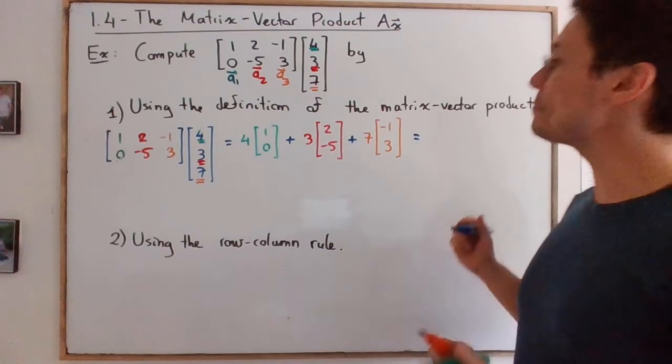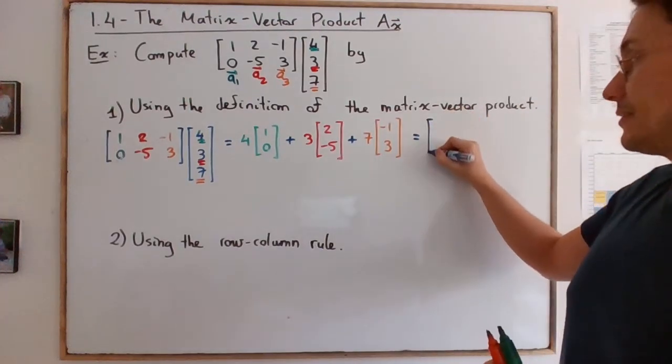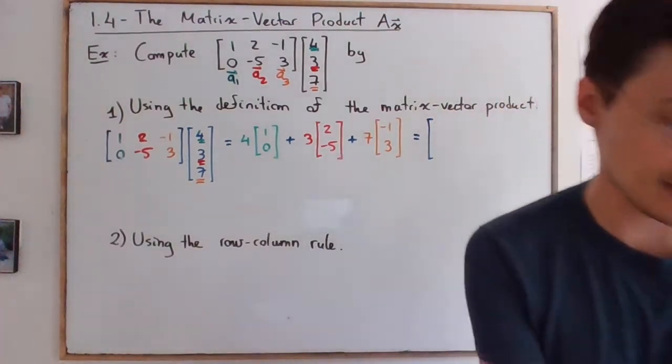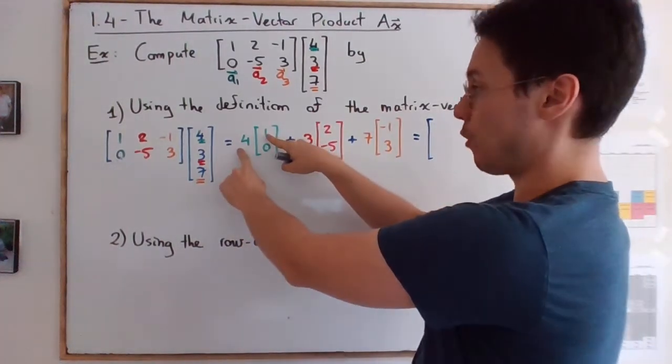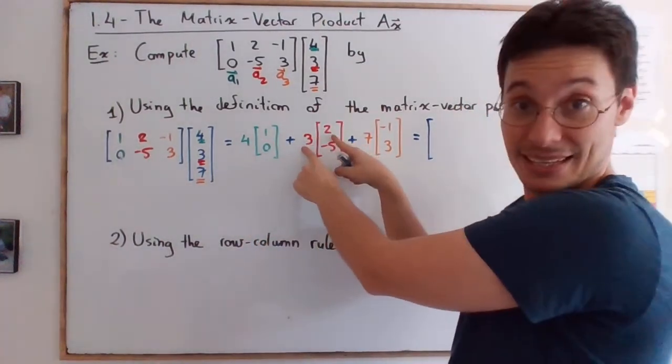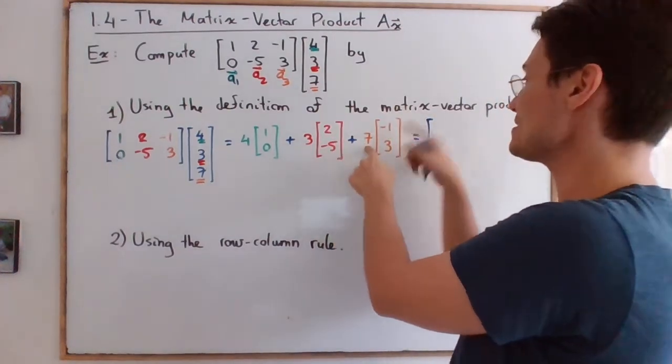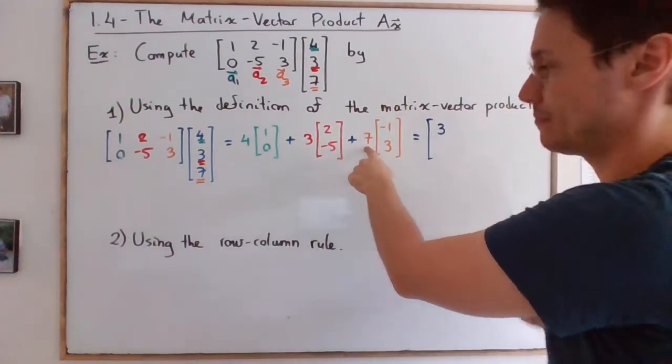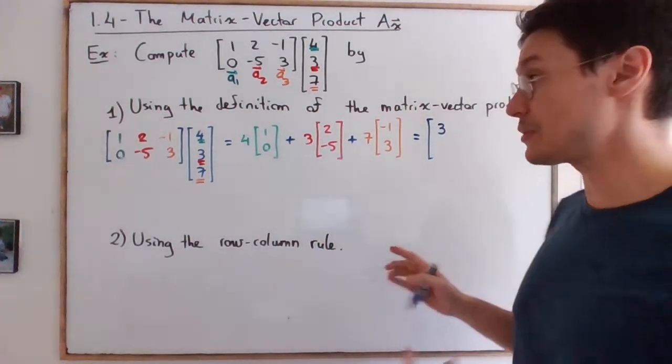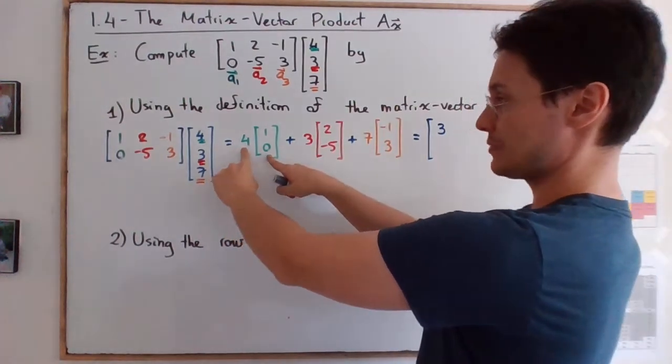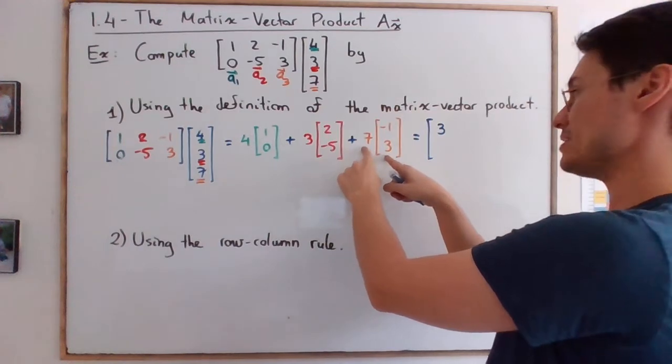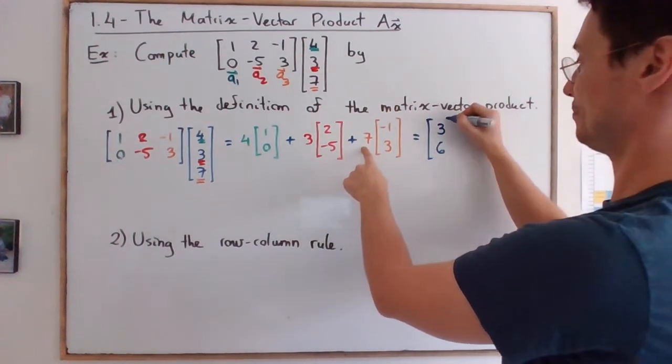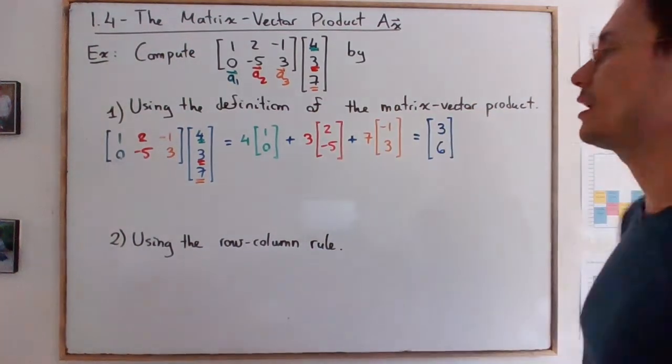And then you compute component by component. The trick is, as I said, I was using my two fingers. So 4 plus 6, 10, minus 7, 3. Then second component, 0, minus 15, plus 21. So that's going to be 6.